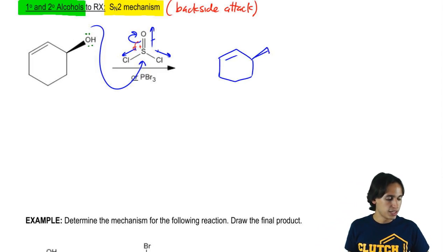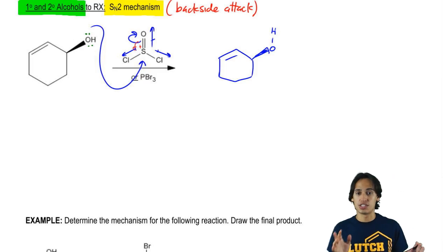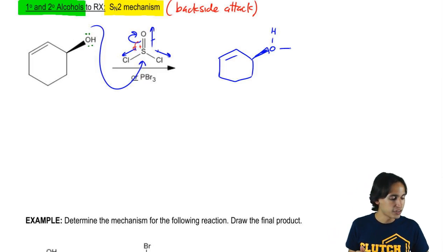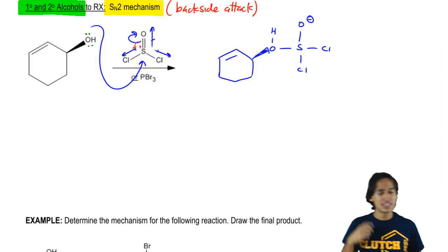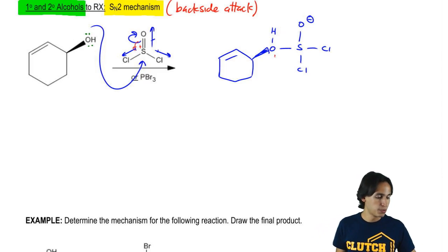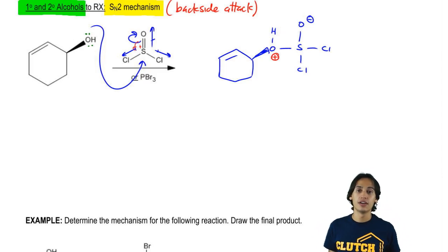What I wind up getting is O-H. That H is still there from before, but now it's attached to a sulfur, an O negative, and two chlorines. Now in this next step—oh, by the way, we're forgetting a charge. There should be a positive charge right there because oxygen doesn't like having three bonds.